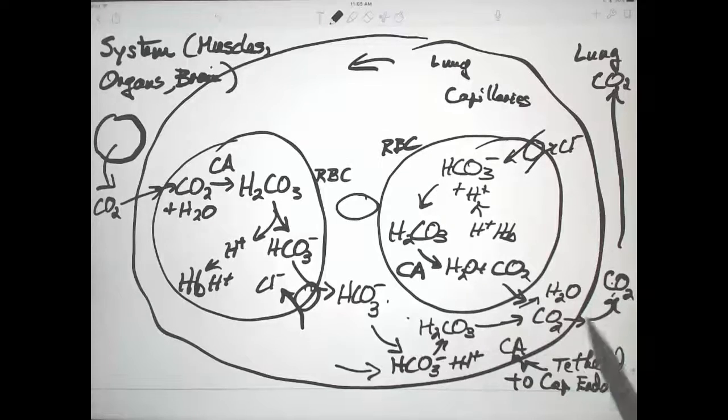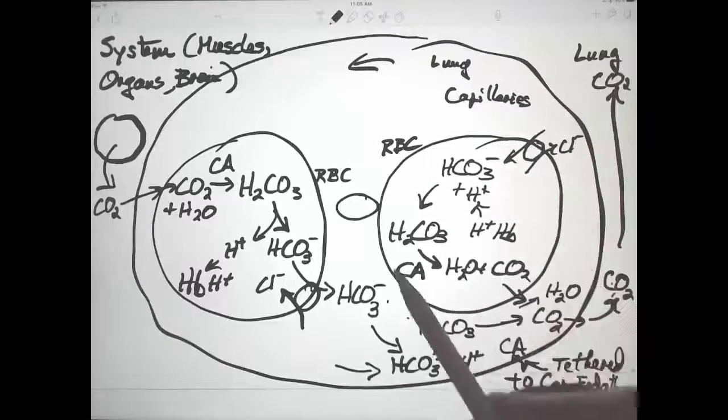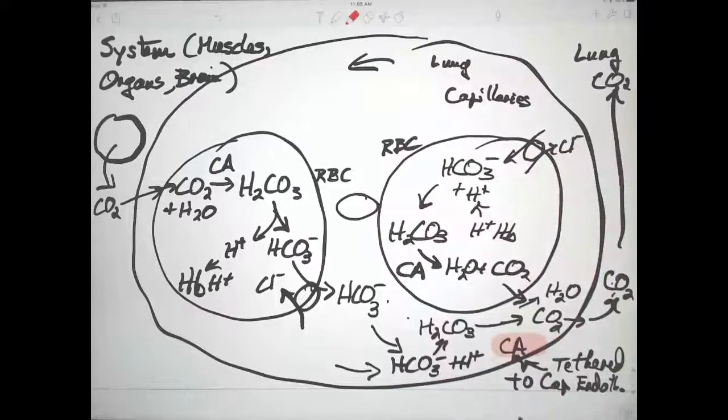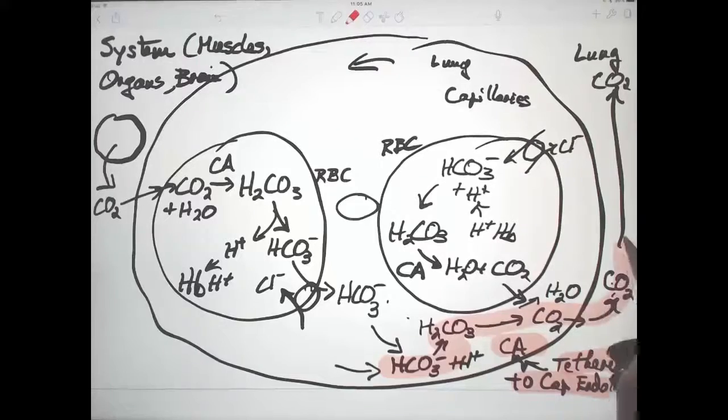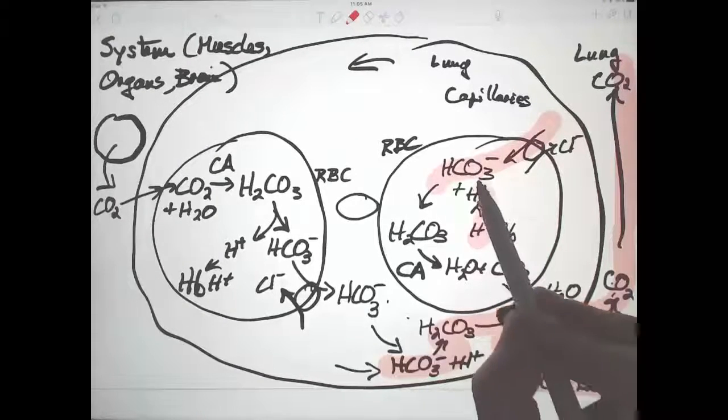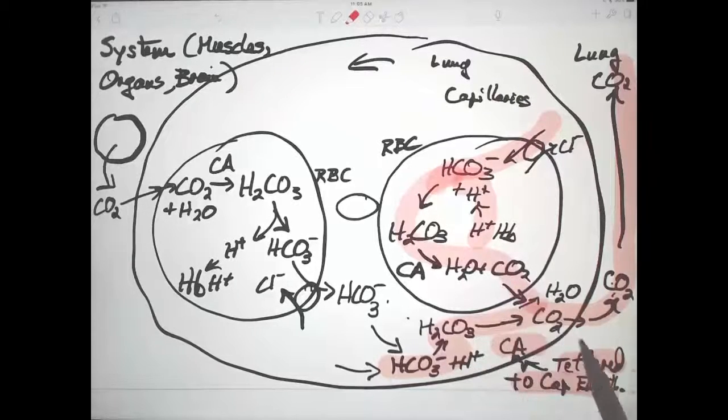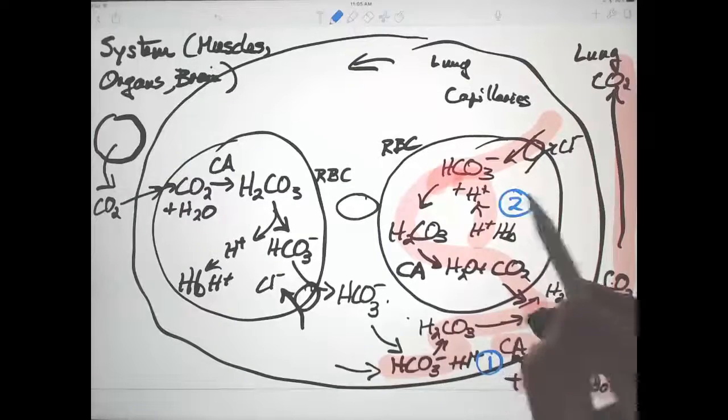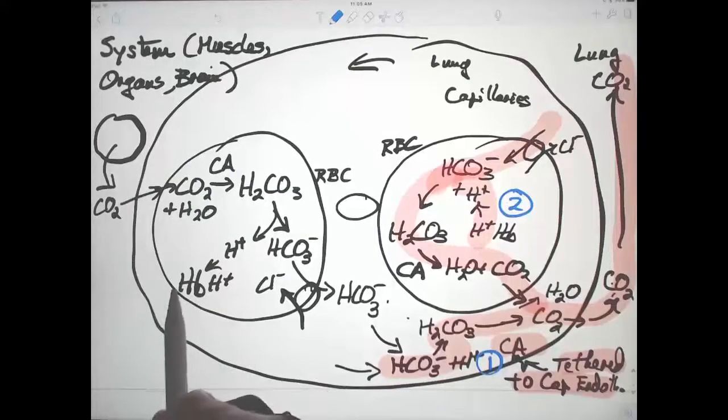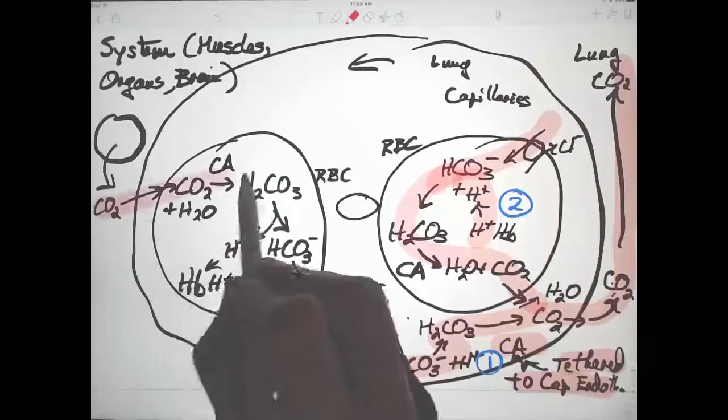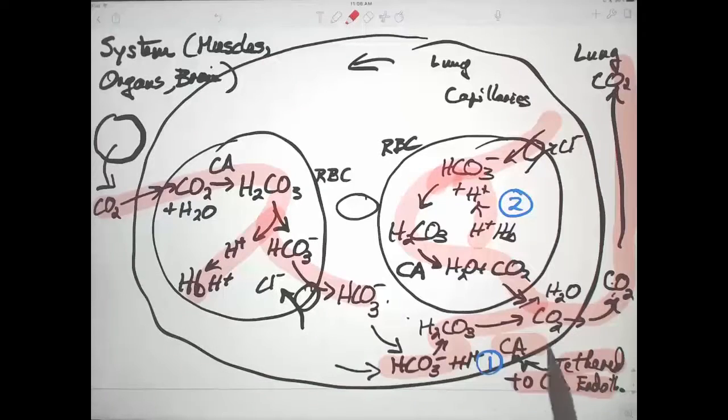So here, we reverse the reaction. We could have the entire reaction taking place simply in the red blood cell. The presence of this carbonic anhydrase tethered to the capillary endothelium means that we speed it up. We have two ways to get our protons and bicarbonate converted back into carbon dioxide. One pathway is this one, one in the capillary endothelium, the other in the red blood cells. Whereas over here in the system, we only had one pathway. And the reason for carbonic anhydrase present in abundance in lung is to speed up this reaction to make sure you get rid of carbon dioxide quickly.